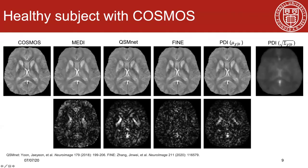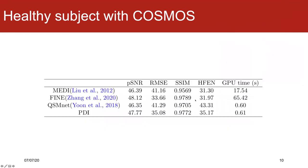For COSMOS test data, we compare PDI with MEDI and two other deep learning methods, QSM-NET and FINE. The reconstruction map and error map are shown here. You can see that the variance map of PDI matches the error map with high uncertainty or error located at the thalamus and globus pallidus. Here are some quantitative metrics. PDI gives slightly better results compared to MEDI and QSM-NET, meanwhile achieves faster inference time on GPU than FINE.